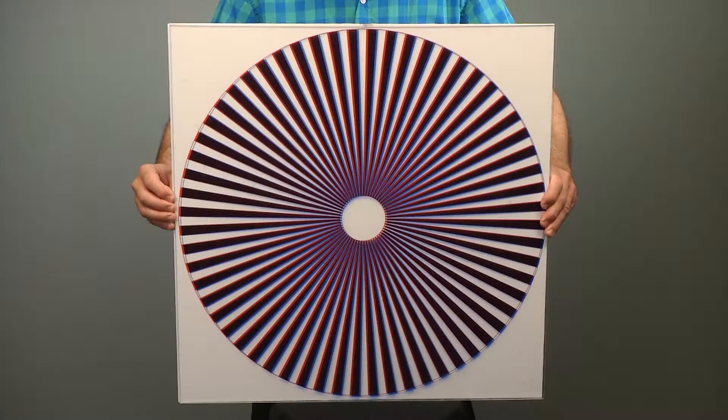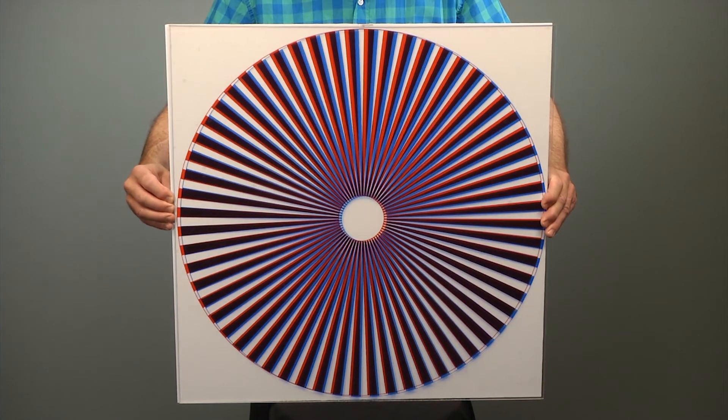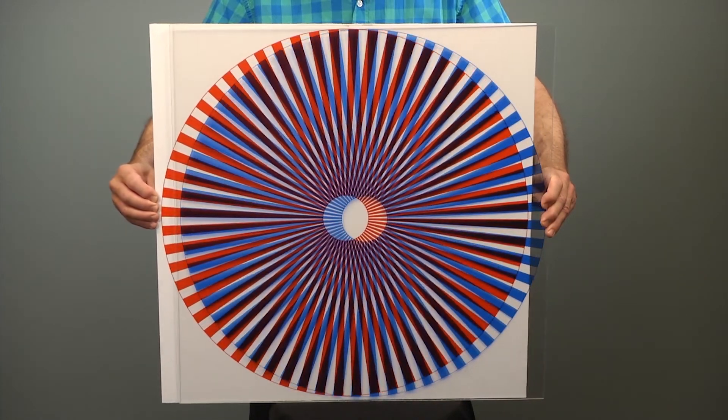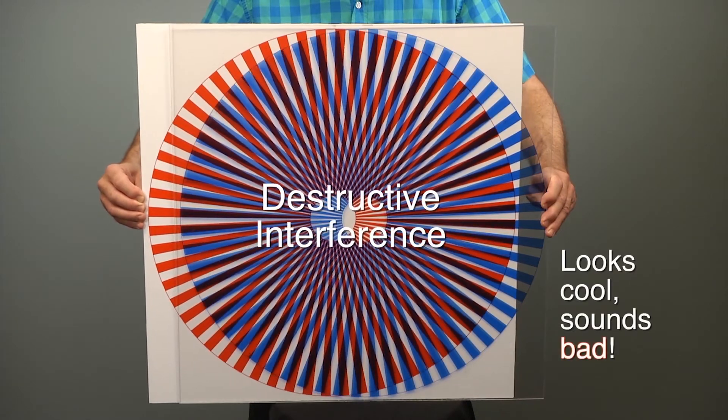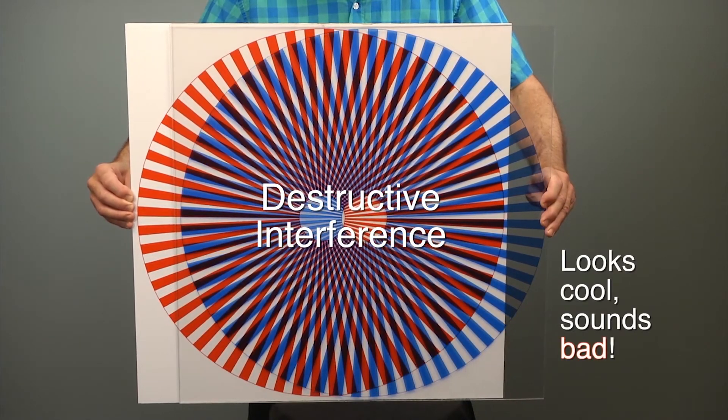I'll demonstrate using these two identical patterns. The blue pattern represents direct sound waves, and the red pattern represents reflected sound waves. They start out together, but when I move the red one backwards, like a delayed sound reflection, it creates destructive interference patterns, which changes the original sound wave.